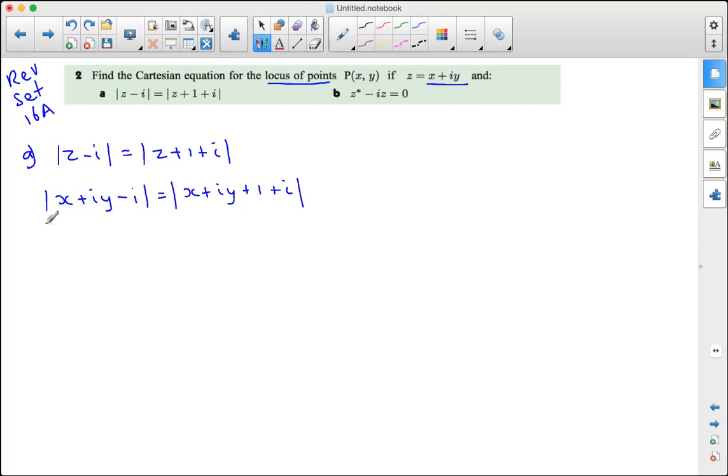If we collate the real parts and the imaginary parts, on the right hand side we get x + 1 as the real part, and then we have i(y + 1) as an imaginary part.